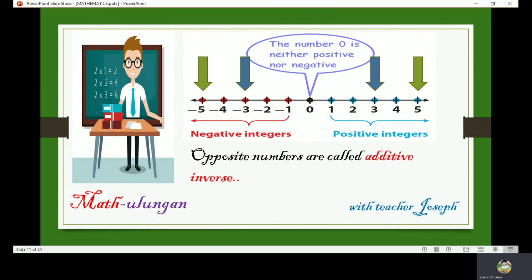Opposite numbers are called additive inverse. I repeat, opposite numbers are called additive inverse. Therefore, the additive inverse of negative four is positive four. The sum of a number and its additive inverse is always zero.